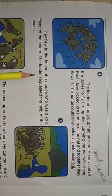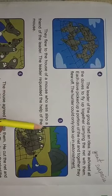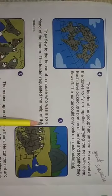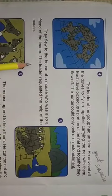They flew to the house of a mouse who was also a friend of the leader. Now, where did they land? Near the house of a mouse. The leader requested the help of the mouse. What could the mouse do? The mouse will bite and cut the net and will rescue them.